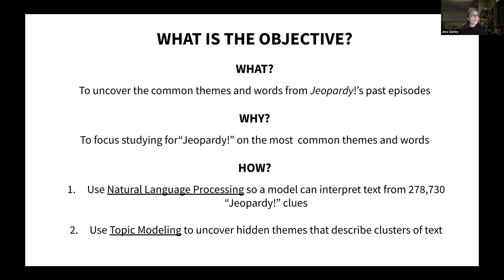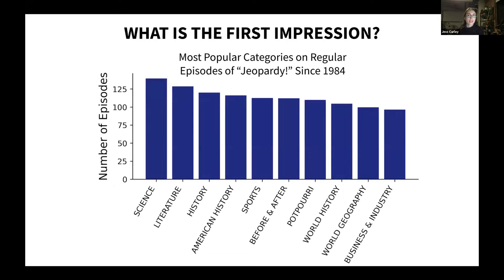You may be asking, can't you just look at the most common categories that appear in Jeopardy? And I can, but that's not specific enough. So let me show you what I mean. Here are the top 10 categories from Jeopardy over time from the last 35 years of episodes. We can see a lot of history and geography, science, literature, sports, and other miscellaneous categories.